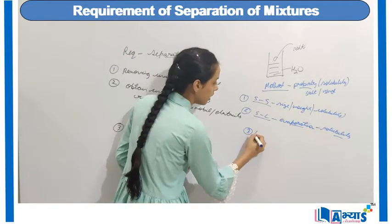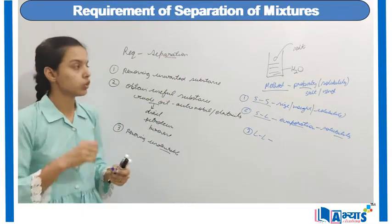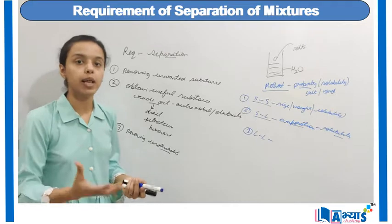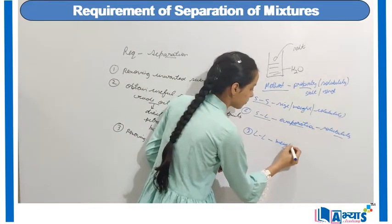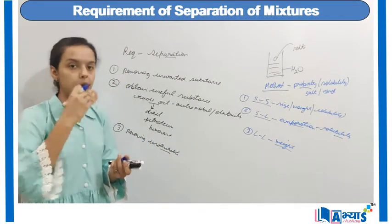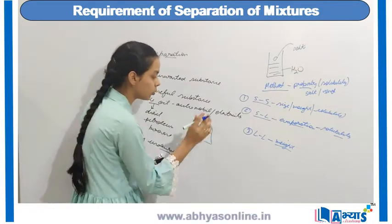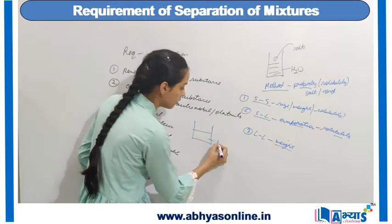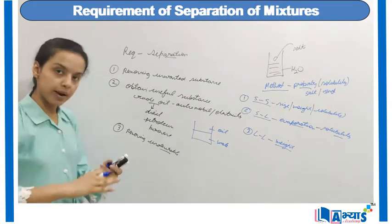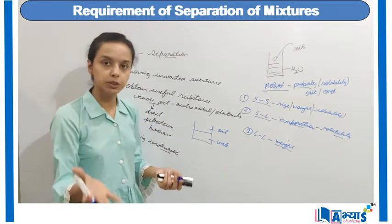The third case is liquid-liquid separation. Suppose I want to remove oil from water — both are liquids. To separate oil and water, we use the property of density or weight. If I take a beaker and add oil and water into it, after some time the water will come to the bottom and oil will come to the top, because water is heavier and sinks, while oil is lighter and rises to the upper portion. You can separate them with the help of even a spoon.